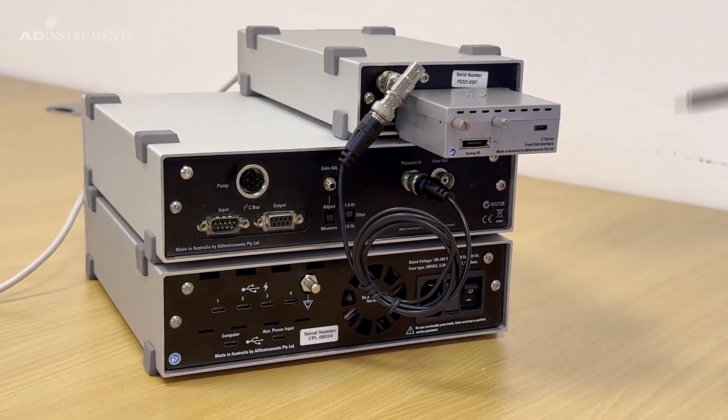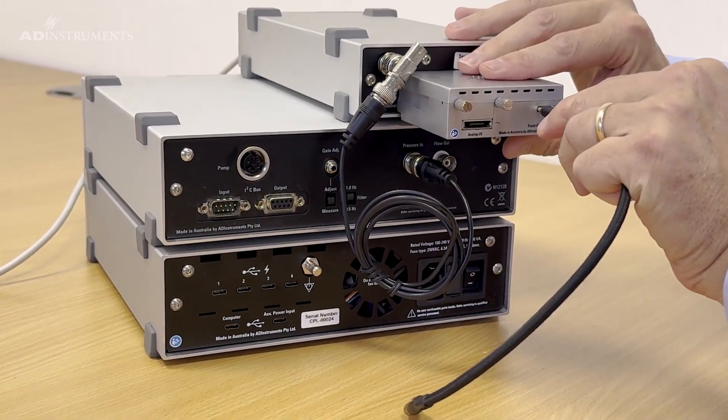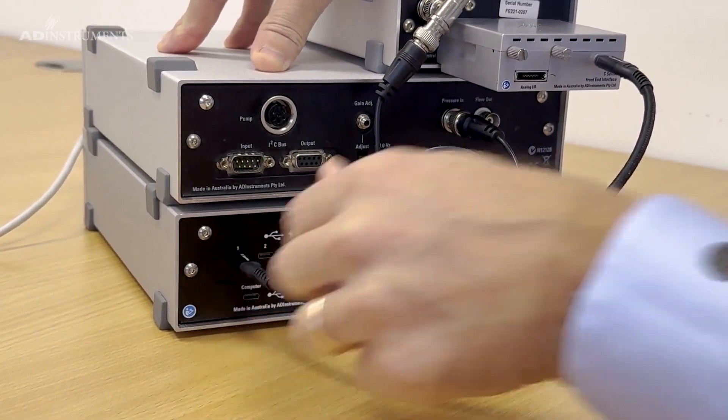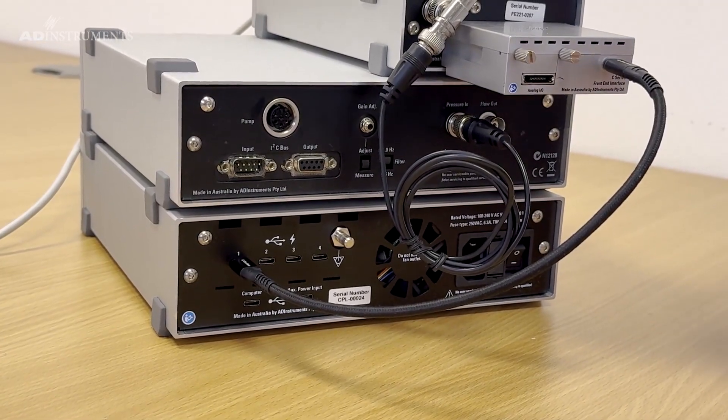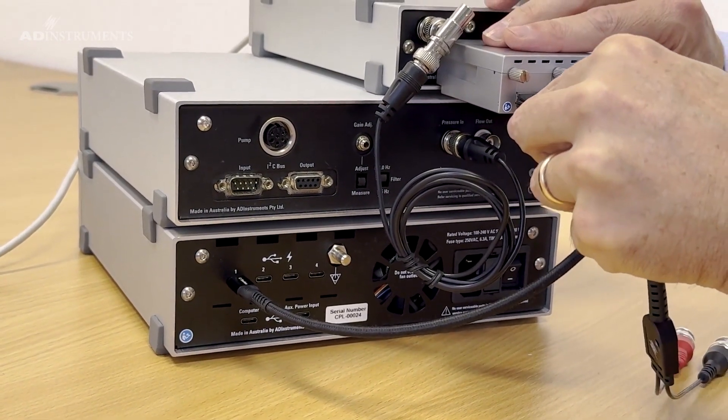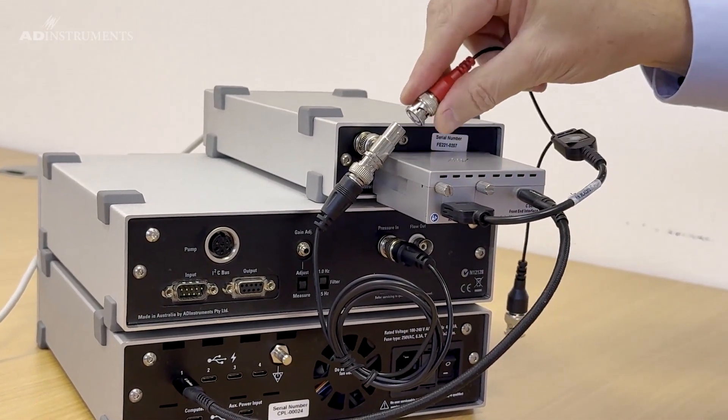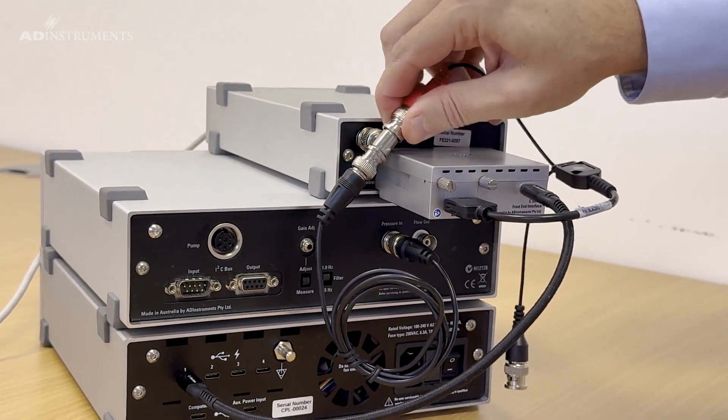This will in turn connect to the PowerLab through the USB-C ports and also on this input port on the PowerLab. The analog cable's red connector connects to the other side of the BNC T-piece.